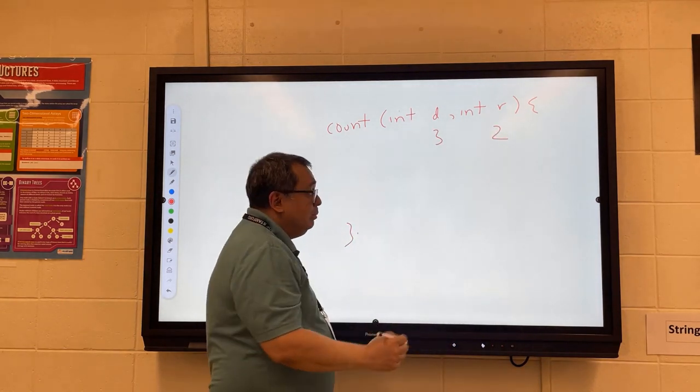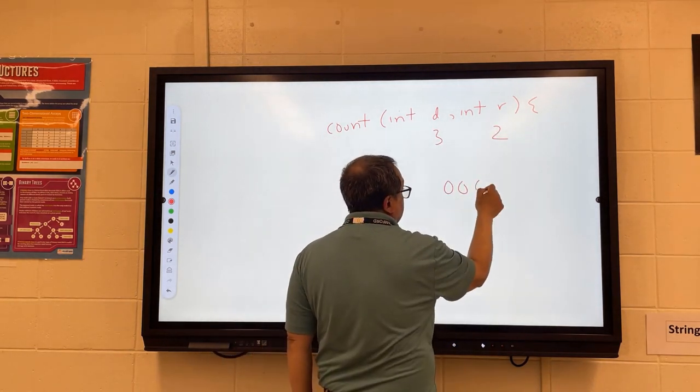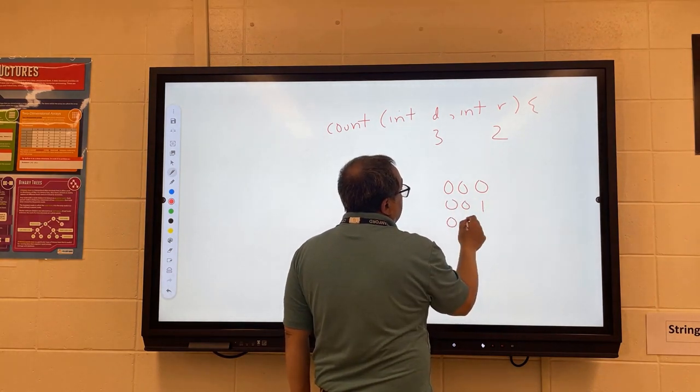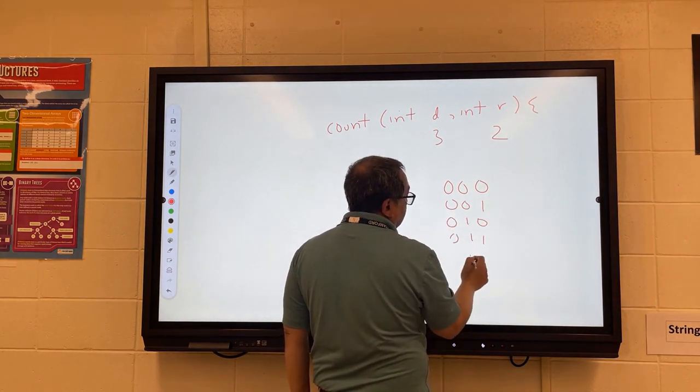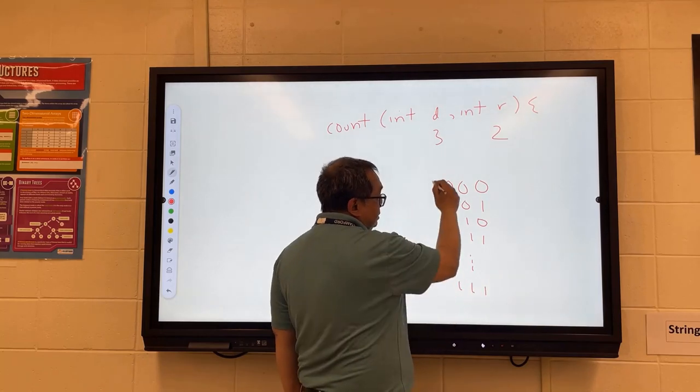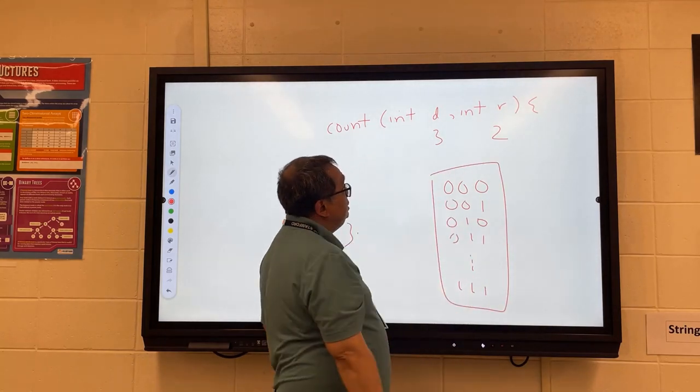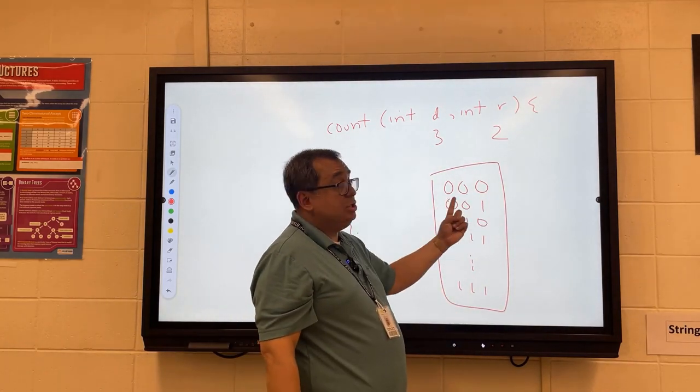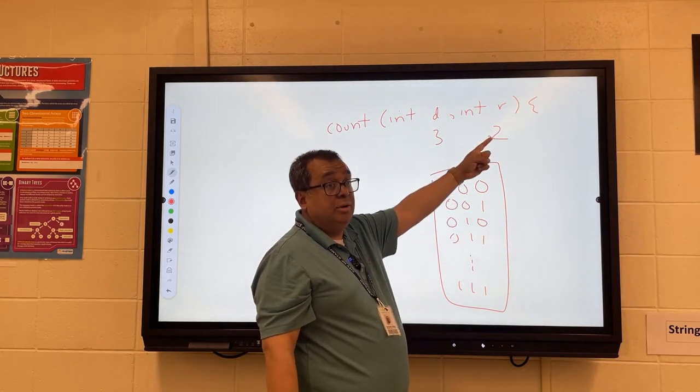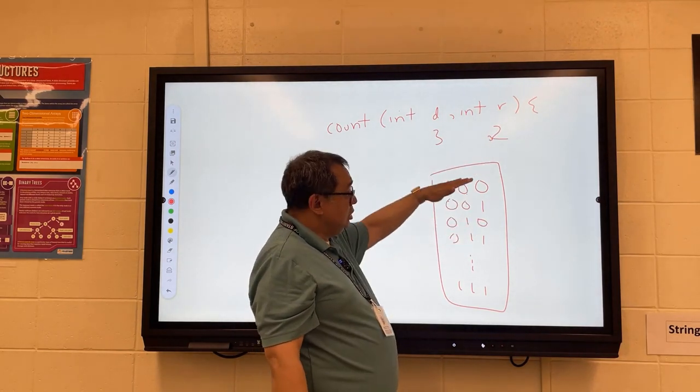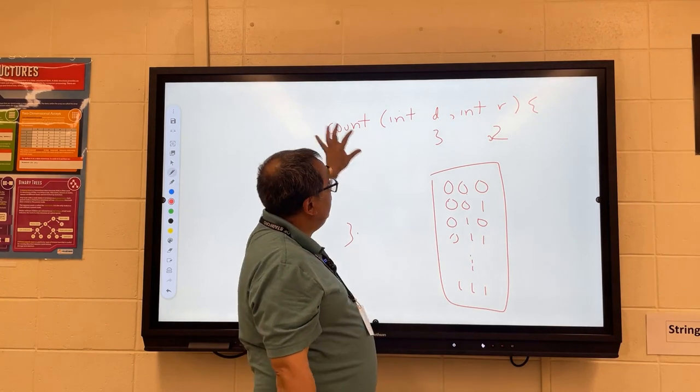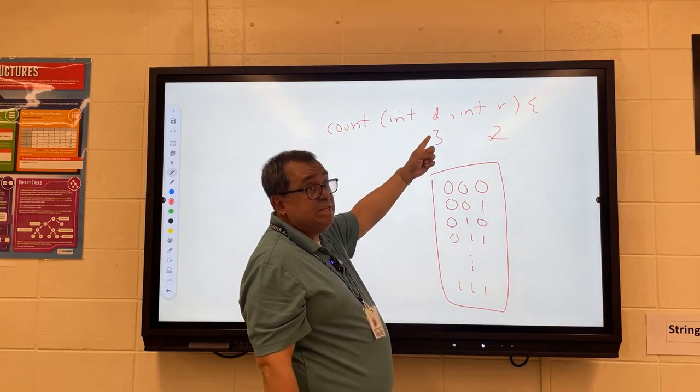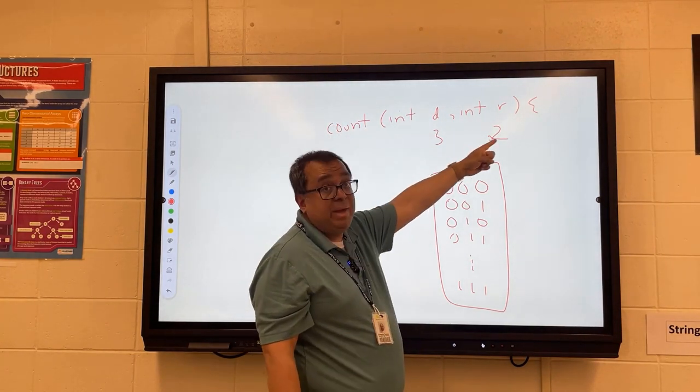So for example, if I was going to say three and two here, right, you would print this sequence here, all the way up to one, one, one, like that. You see that? So here you can see it's three digits, three digits, and the base is two, right? So that's binary. So you would print that. And so I want this method created where I can specify the number of digits and the base.